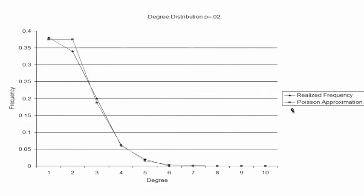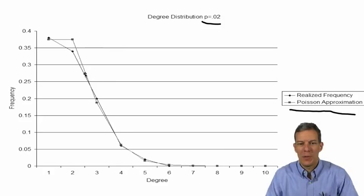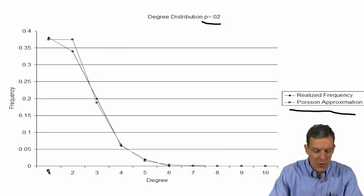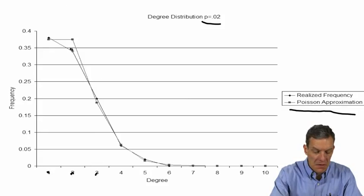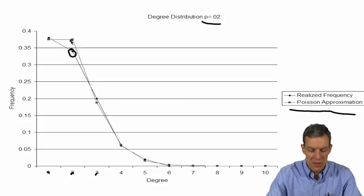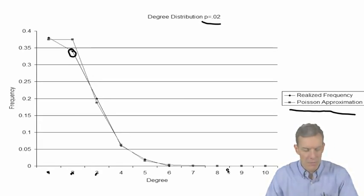If we have a Poisson approximation where you had an expected probability of links of 0.02, then you would get the square dots here. The realized frequency is by the diamonds. Actually these two are very difficult to tell apart. So the frequency distribution of how many nodes have degree one, degree two, degree three, and so forth, there's too few nodes that had degree two, but everywhere else were pretty much right on the graph.